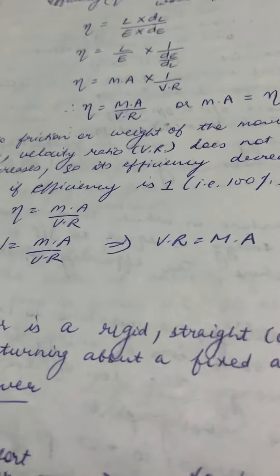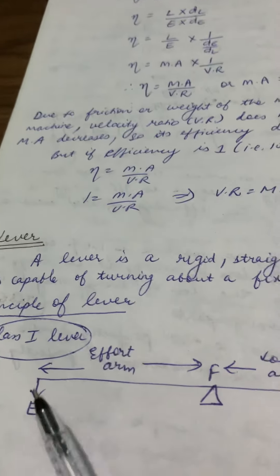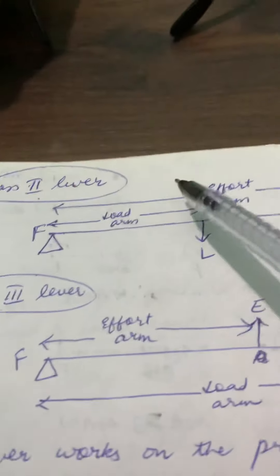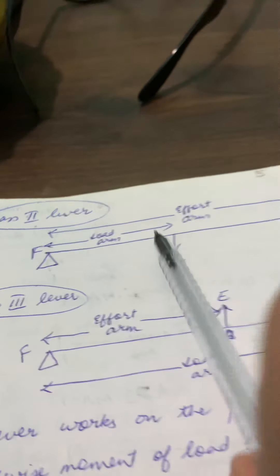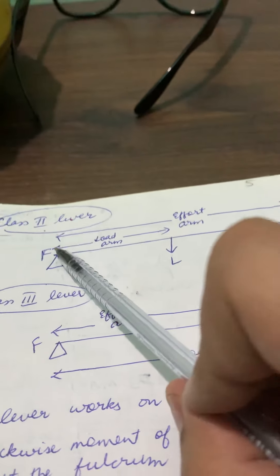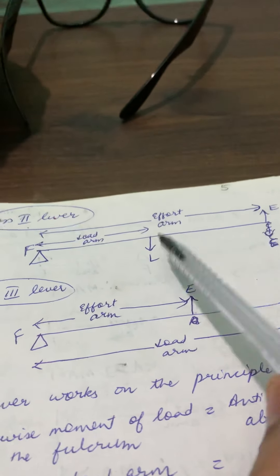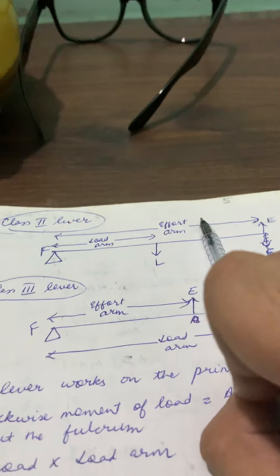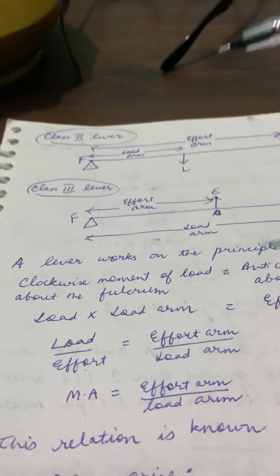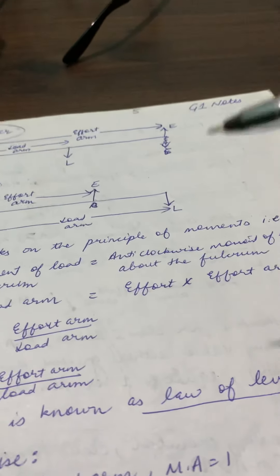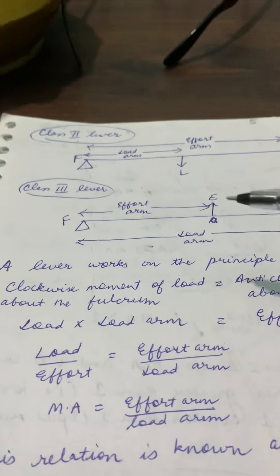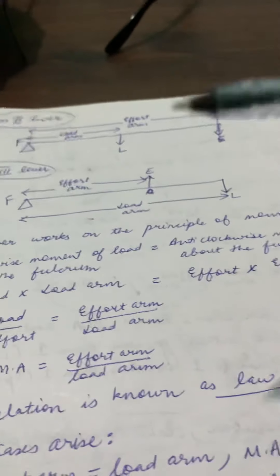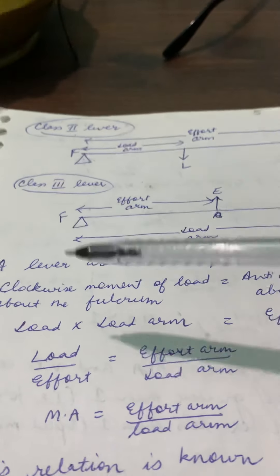After this, there will be some important terms. The distance between effort and fulcrum is called the effort arm, and the distance between fulcrum and load is called the load arm. Now, the principle of the lever is the principle of moments, which we have studied in chapter one: the clockwise moment of the load about the fulcrum equals the anticlockwise moment of effort about the fulcrum.